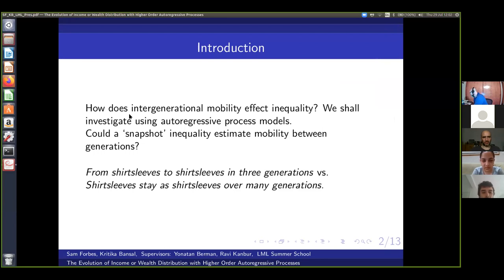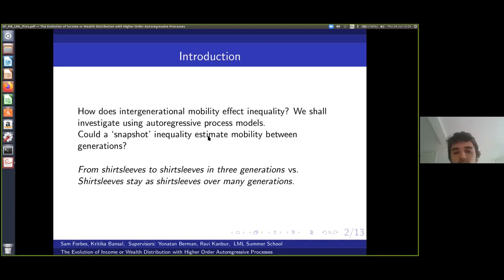To introduce what we'll be discussing, our main question is: how does intergenerational mobility affect inequality? In particular, we're talking about economic mobility and economic inequality, and we shall be investigating this using autoregressive process models. Another interesting question is the reverse - if you had a measure of inequality, how would you then estimate mobility between generations? However, we'll be investigating the first one: how does mobility affect inequality.